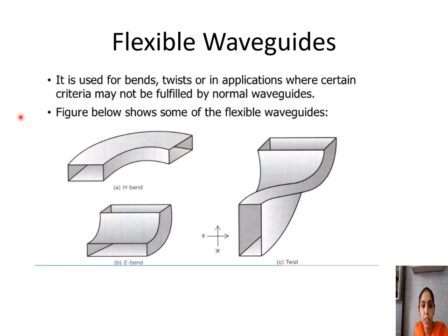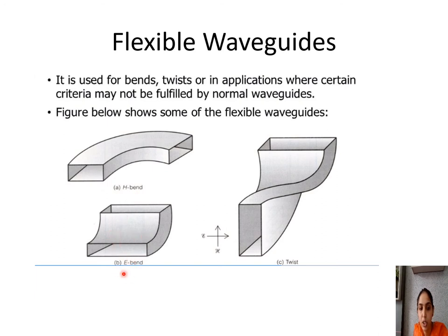For an H-bend: if the bend is in the wider dimension of the waveguide, the H-lines are affected — that is why it is called an H-bend. If the bending takes place in the narrower dimension, the E-lines are affected, so it is called an E-bend. Wider dimension change affects H-lines giving an H-bend; narrow dimension bend affects E-lines giving an E-bend.